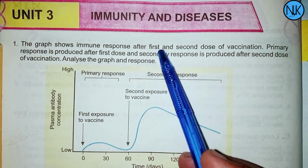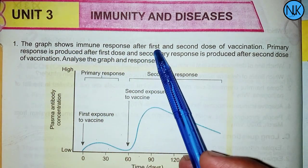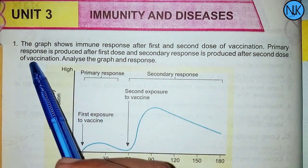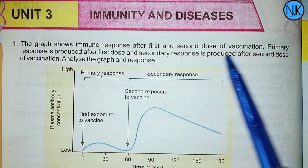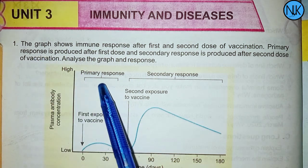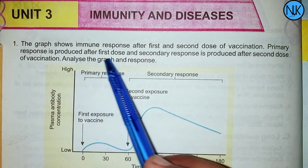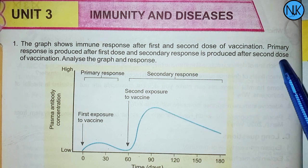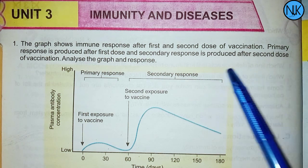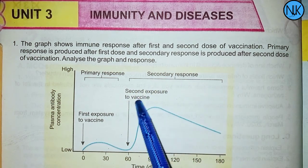The graph shows the immune response after the first and second dose of vaccination. The second response is produced after the second dose of vaccination, which is the second exposure of the vaccine.